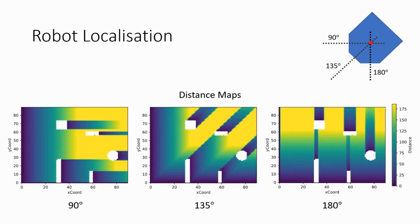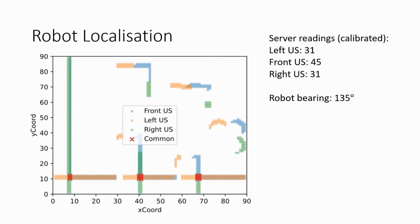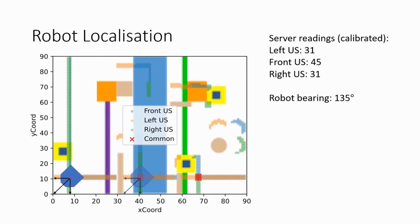Then, we can use the calibrated ultrasound sensors and the bearing of the robot to determine the robot's precise location from our distance maps. For example, suppose the current bearing of the robot is 135 degrees. We consider the pixel distance plots for 90 degrees, 135 degrees, and 180 degrees for the right, front, and left ultrasound sensors respectively. Suppose the server tells us the left, front, and center ultrasound values are 31, 45, and 31 respectively. Each ultrasound value and its corresponding distance plot gives us a set of possible positions. The probable positions of the robot are the intersection of these three sets. Overlaying the map, we can see that this is accurate as the robot can be at either of these three positions.